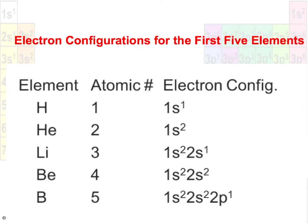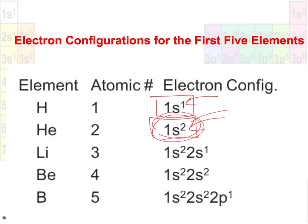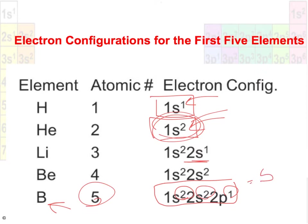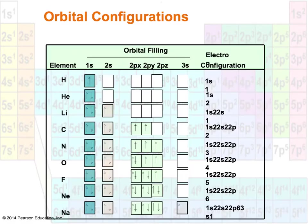Here are the electron configurations for the first five elements. Hydrogen has one electron: 1s¹. Helium has two: 1s². Once 1s is filled, you move to 2s. Boron has five electrons, so the configuration is 1s² 2s² 2p¹ — notice that even though P sublevels hold a maximum of six electrons, it's perfectly okay to have fewer. It just depends on how many an element needs.